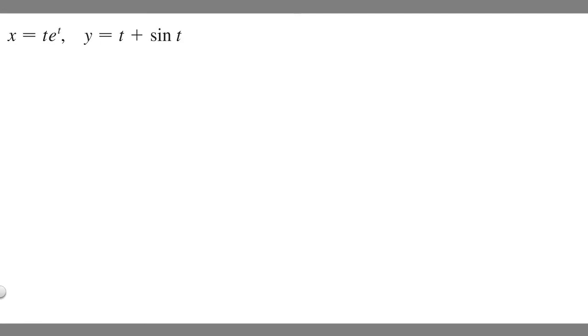In this problem, we're given two different parametric equations, and we're going to solve for dy/dx. In order to solve this problem, you need to know that dy/dx is equal to dy/dt over dx/dt. So essentially what we have to do is find the derivative of x and the derivative of y, and we're going to put the derivative of y over the derivative of x, and that's how we find dy/dx.